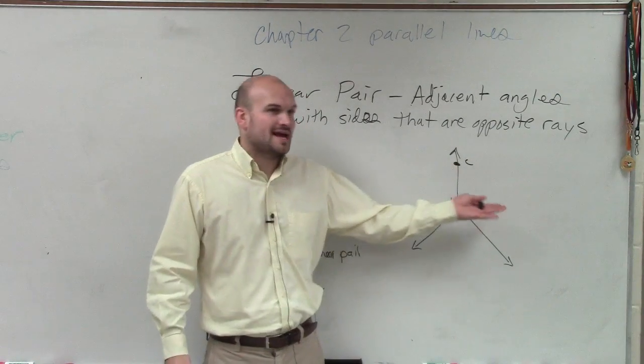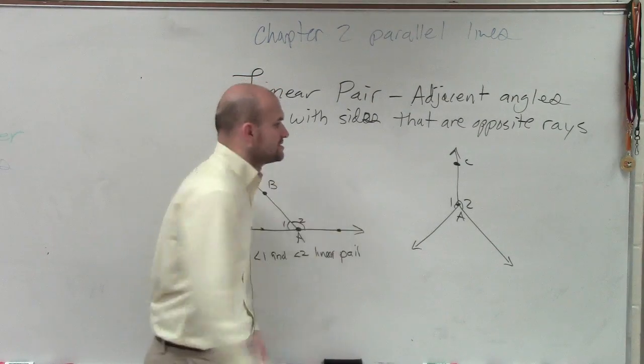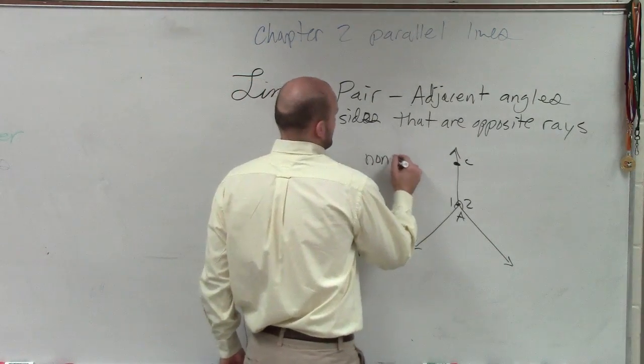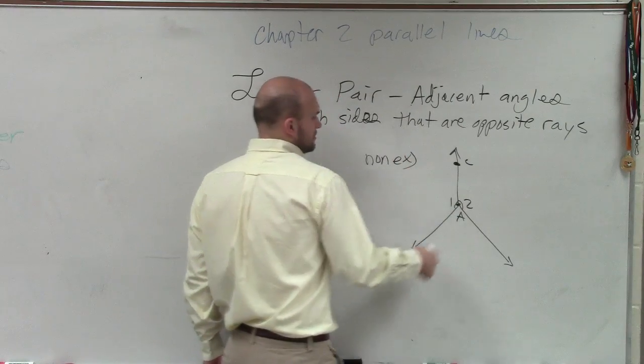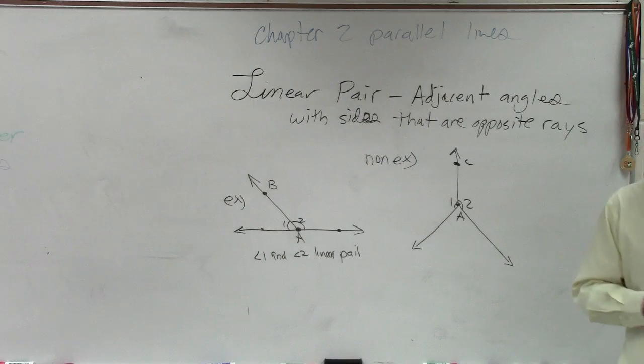But do their other sides create a line? Are they opposite rays then? No, so this is going to be a non-example. So angle one and angle two are not a linear pair.